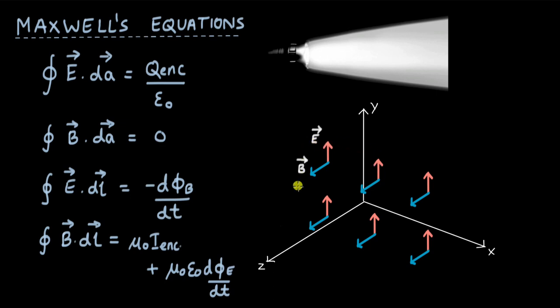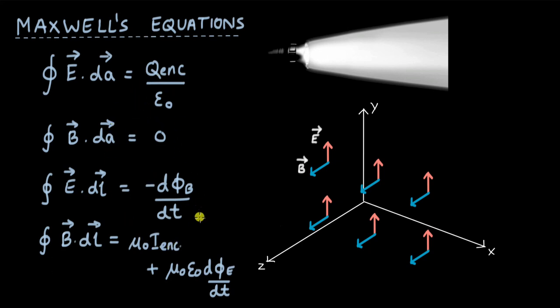We will test whether our assumed fields follow Maxwell's equations, and if so, what are the conditions — what speed should they move at, and should they be transverse or longitudinal? These are the basic ideas we will develop throughout the video, and in doing so we will fully see the power of all Maxwell's equations as they come together to explain the nature of light.